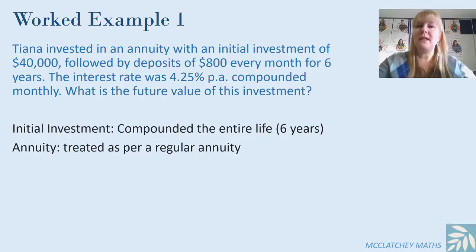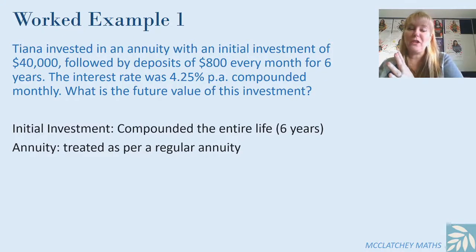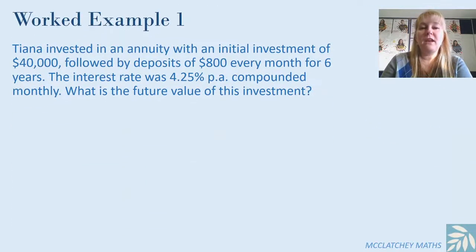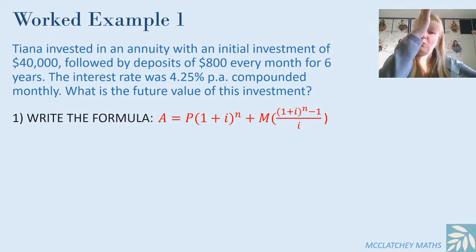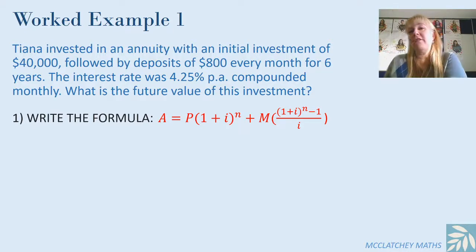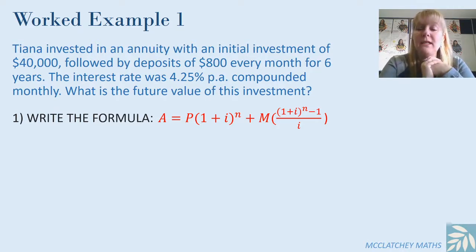But we're going to treat them as separate investments. That $40,000 does not get treated as an annuity and the annuity does not get treated like a regular compound interest problem — we're going to bring the two together. So firstly I'm going to write the formula. Notice what I could have done is just worked out the $40,000 future value and then the future value of the $800 and added the two together. Alternatively I can bring the two formulas together and make one formula, and that's what I've done here.